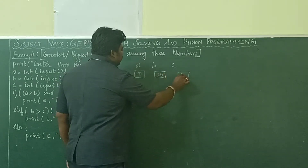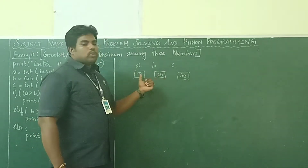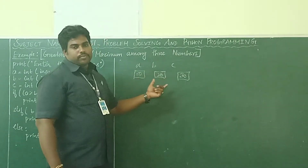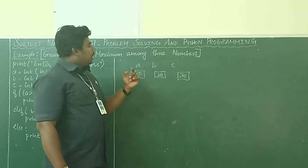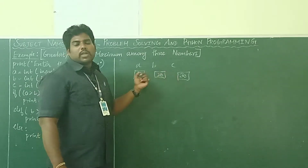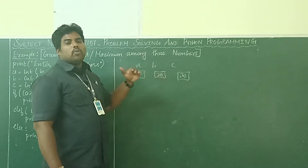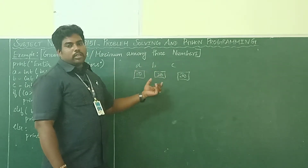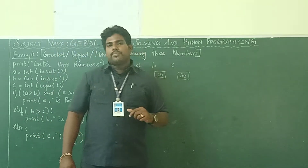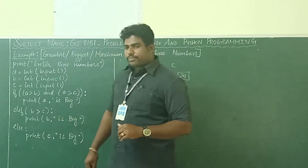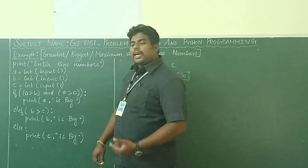For example, values 10, 20, and 30. Then you have to find out which one is greater among these three. As these are simple numbers, you can easily say 30. But how do we make the computer find it? For that we have to write the logic in a Python program. So now you can see the code.